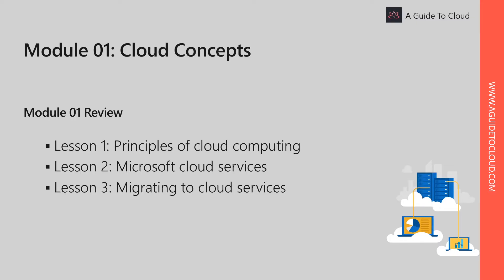The lessons we covered include: the principles of cloud computing, where we learned about the types of cloud computing available — public cloud, private cloud, and hybrid cloud — and the three different cloud service models: Infrastructure as a Service (IaaS), Platform as a Service (PaaS), and Software as a Service (SaaS), which is the primary example of Microsoft 365 or Office 365 suite.